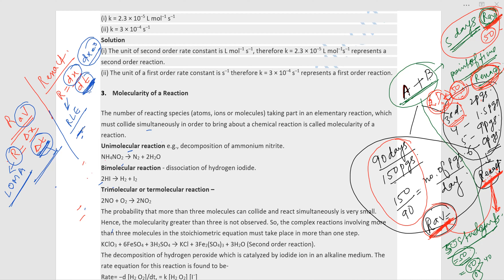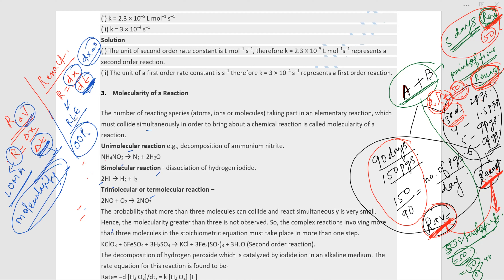If at any specific point of time only one reactant molecule is involved, that determines the order of that reaction. Order of reaction can be fractional or zero; molecularity can never be fractional and can never be zero.